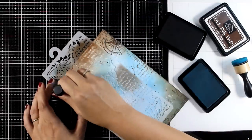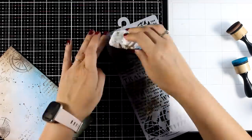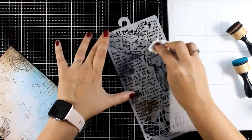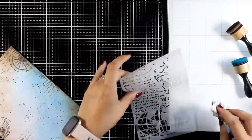By the way those dye inks do not stain your stamps or your stencils which means that they are really easy to clean up. Just spray water on top and with a paper towel they are going to look as brand new.